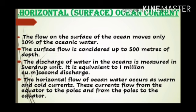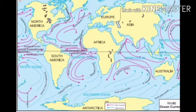These currents flow from the equator to the poles and from the poles to the equator. This map shows the horizontal ocean currents — the red ones are the warm currents and the blue ones are the cold currents.